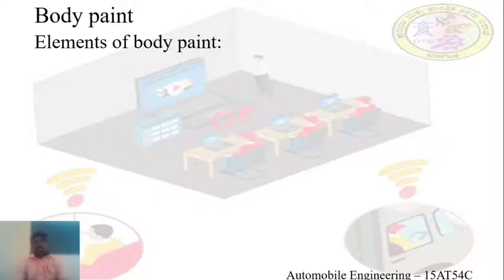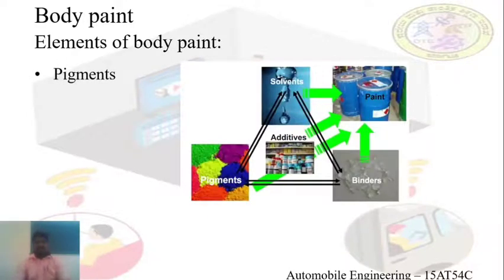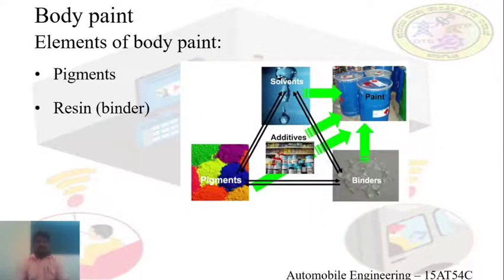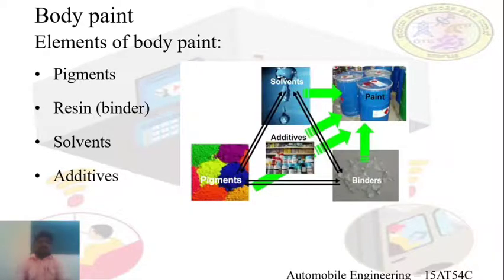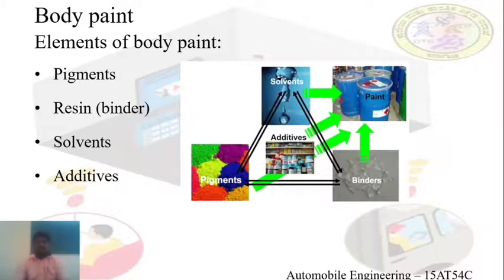If we go through the elements of the body paint — that means what contents are available in the body paints — there are four contents. The first one is pigment. The second one is resins, also called a binder. The third one is the solvent. The fourth one is the additives. In the body paint there are three major elements: pigment, resin, and solvent. To enhance the property of the paint, we can use the additives.